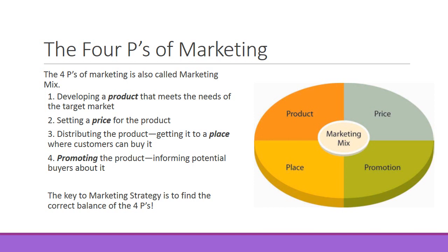The marketing world has lots of tricks and tips. The biggest one is the four P's of marketing. Number one: develop a product that meets the needs of the target market. Number two: setting the price for the product. Number three: distributing the product, getting it to a place where customers can buy it. And number four: promoting the product, informing potential buyers about it. The key is to find the correct balance of the four P's. You can major in marketing — this is very cursory, a surface explanation.